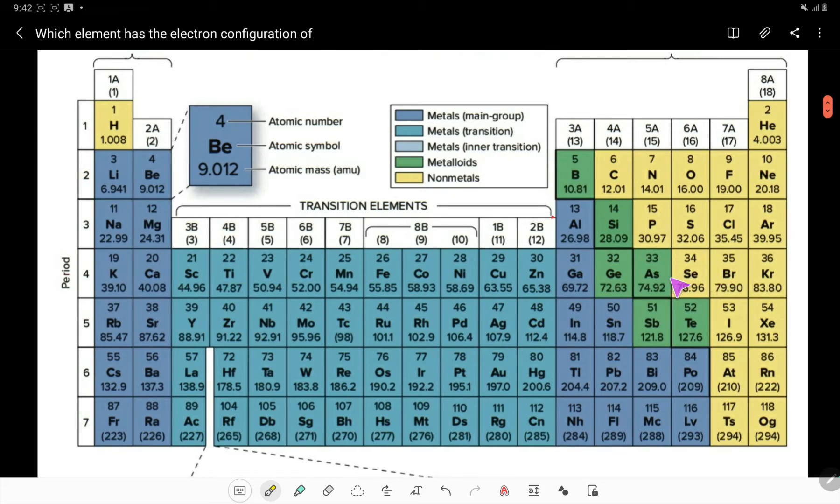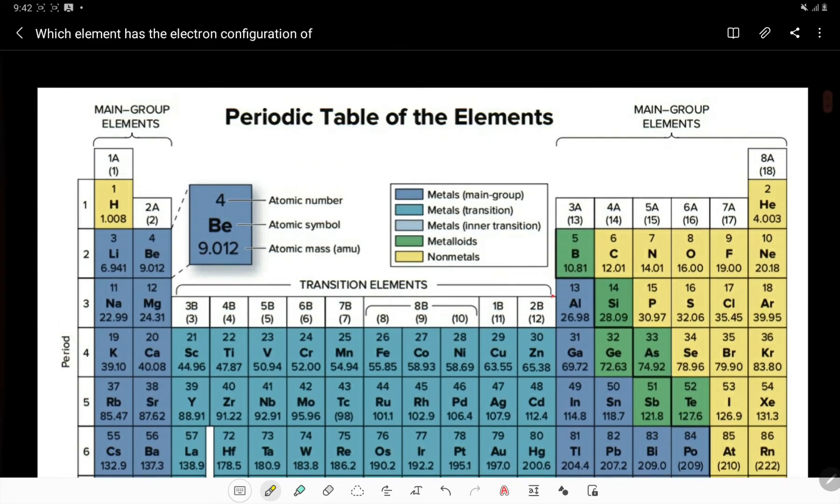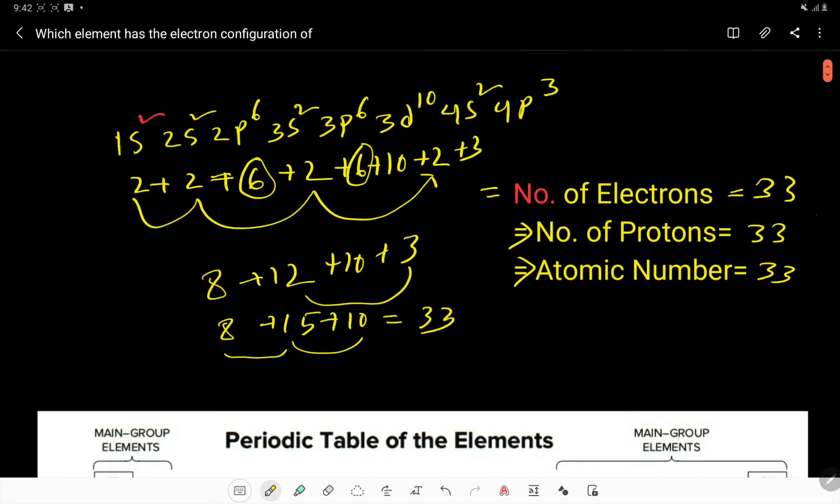Here, 33 is, yes, arsenic, that's right. Its atomic number is 33. Its group number is 5 or 15. So arsenic, so this element is As.